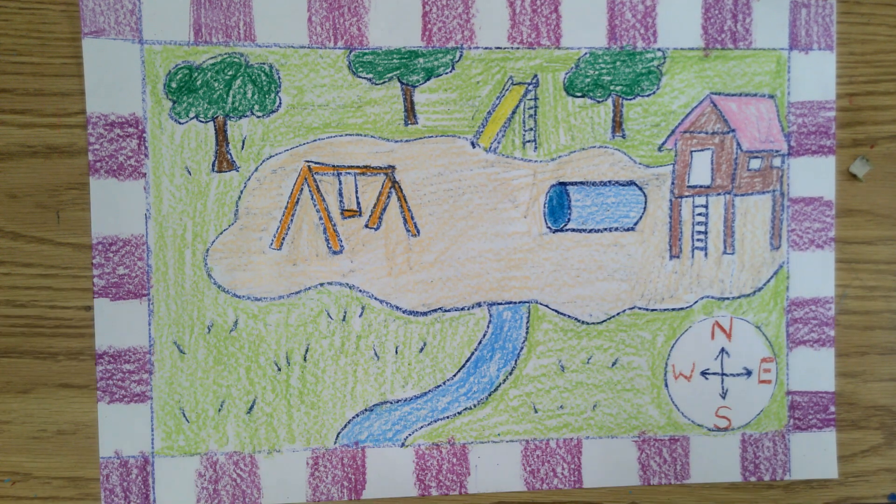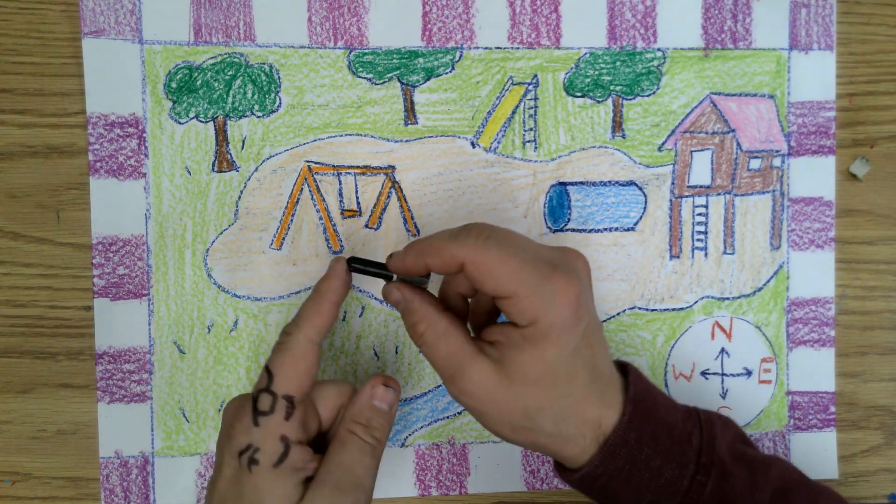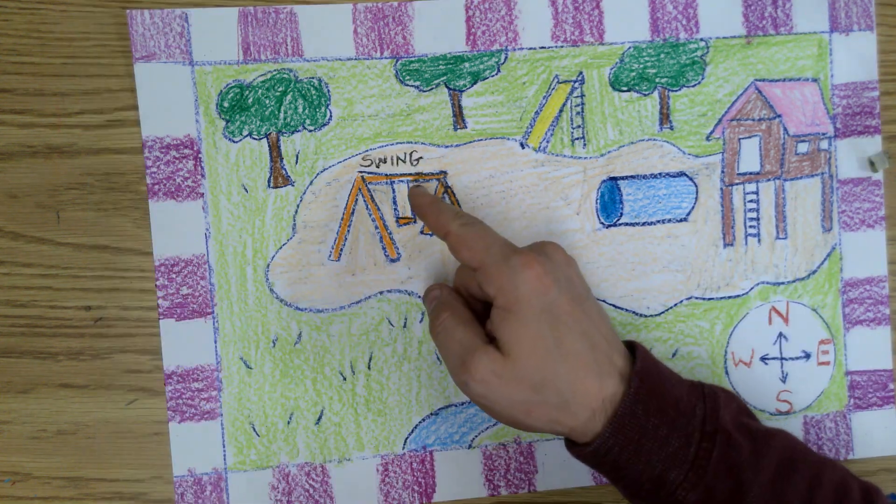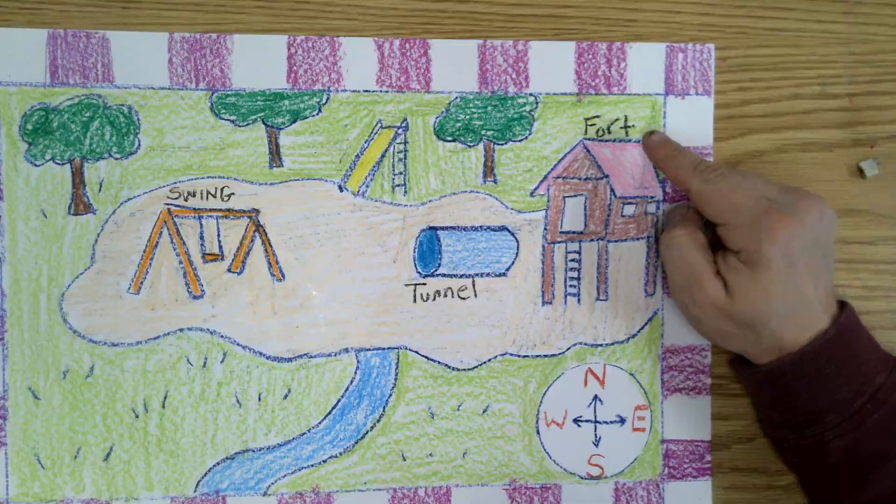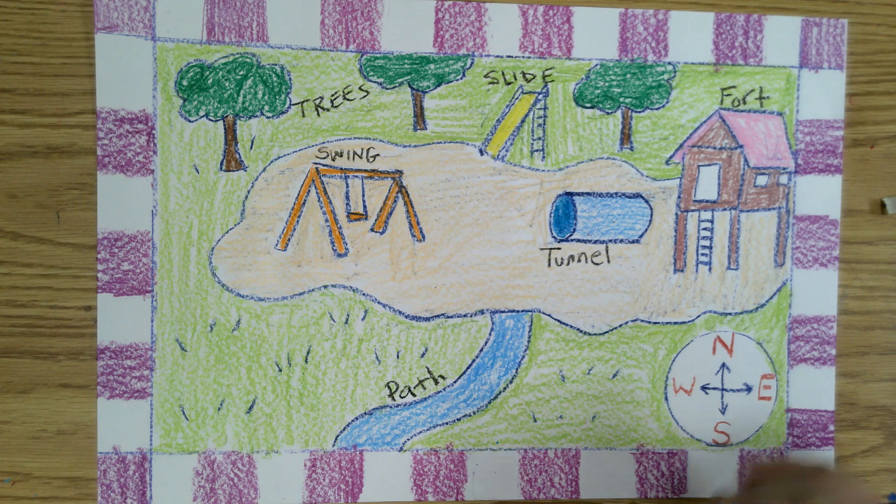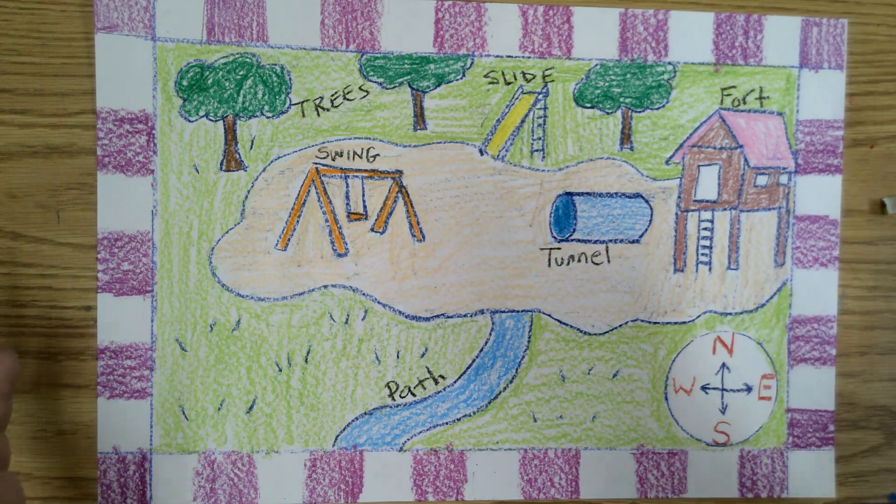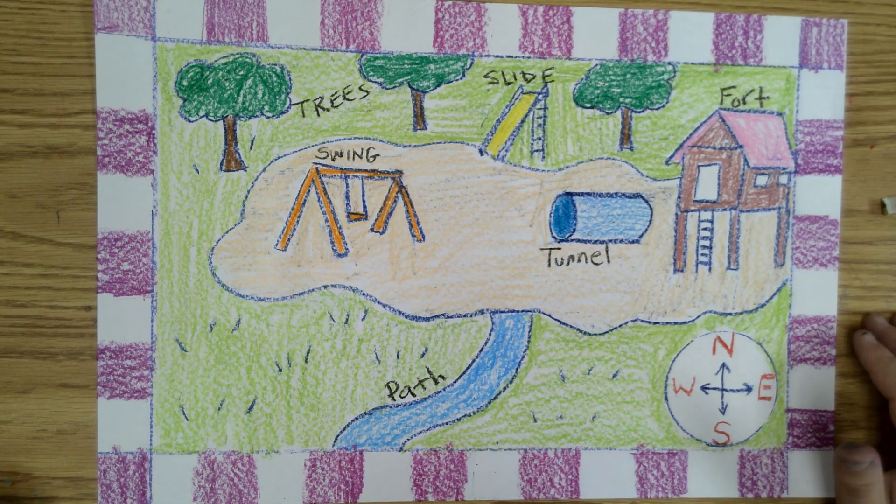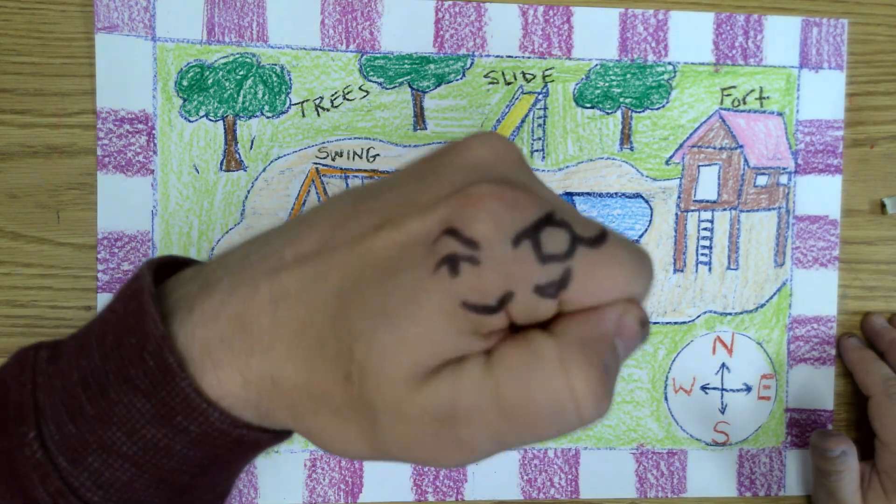The only other detail you can add if you'd like is you can actually use a very dark crayon and label some of the areas. Like the swing, the tunnel, the fort, our path, the slide, and trees. I cannot wait to see what you come up with for your own ideal park. For Mr. Monocle and I, I say good day to you. We said good day!